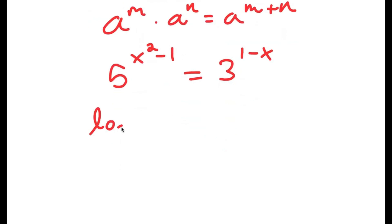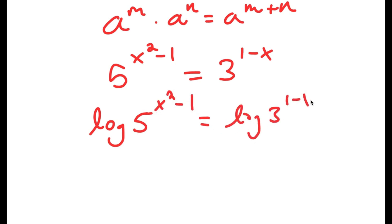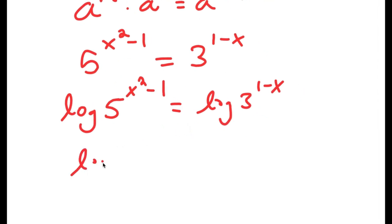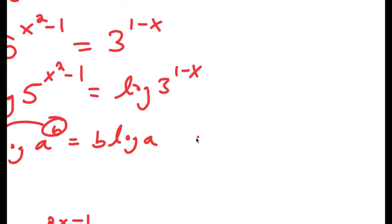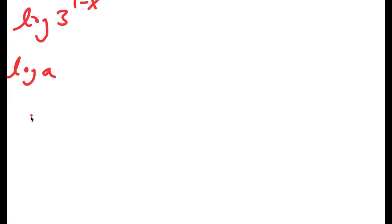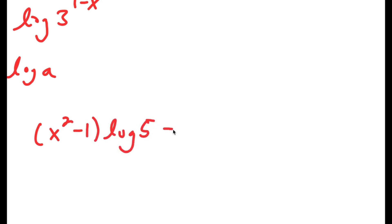Now if I take the log on both sides, I get log of 5 to the power of x squared minus 1 is equal to log of 3 to the power of 1 minus x. Using the rule that log a to the power of b equals b times log a, I get x squared minus 1 times log 5 is equal to 1 minus x times log 3.